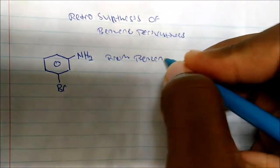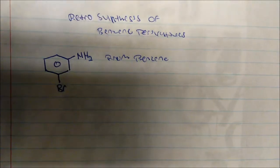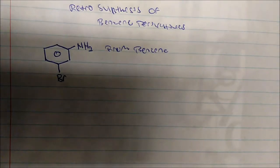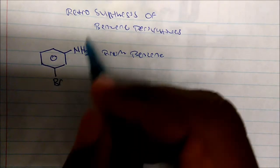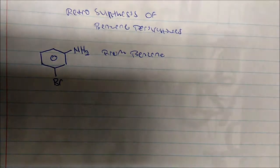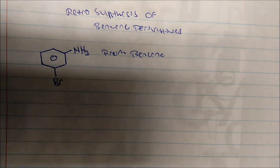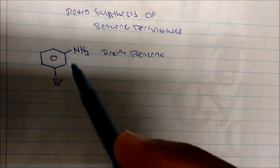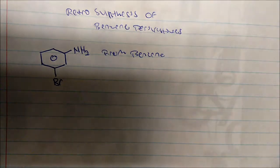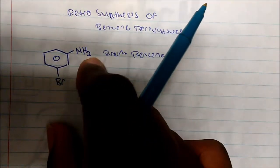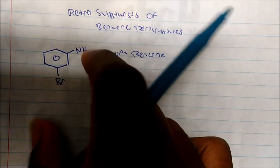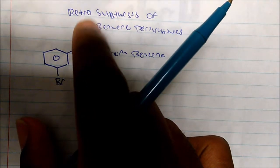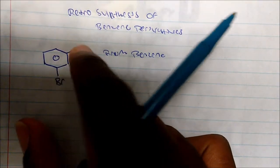How do we approach these problems? Well, you've got to know your directors. I see that my substituents are in the meta position. That tells me that I needed to have a meta director on the ring in order to get the substituents in the meta position. We know that from NO₂ we get aniline, and NO₂ is a meta director.